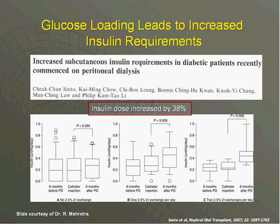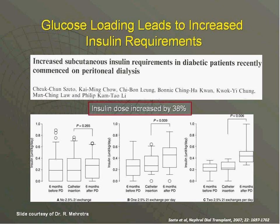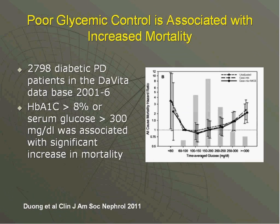Glucose loading in patients on peritoneal dialysis does lead to increased insulin requirements. Another study from Hong Kong showed that using just one 2.5% exchange per day increased insulin requirement; using two 2.5% exchanges led to an even greater increase, presumably driven by increased glucose loading from those more hypertonic solutions.